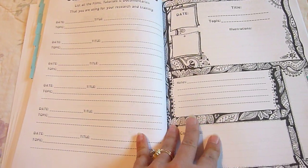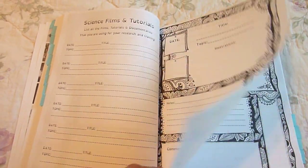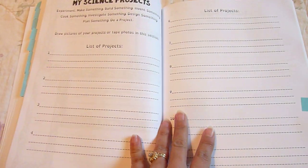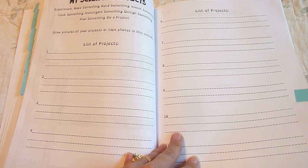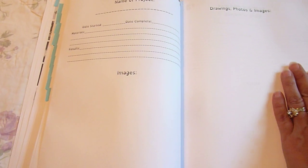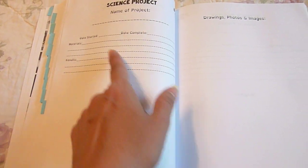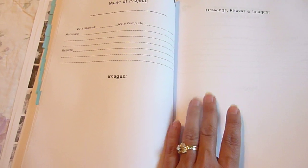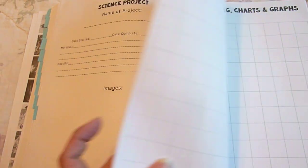Science Films and Tutorials. My Science Projects. And there's, I believe, up to twelve. And they would write their materials, results, the date started, date completed, and so forth. And they could put drawings, photos, and images here or illustrate.